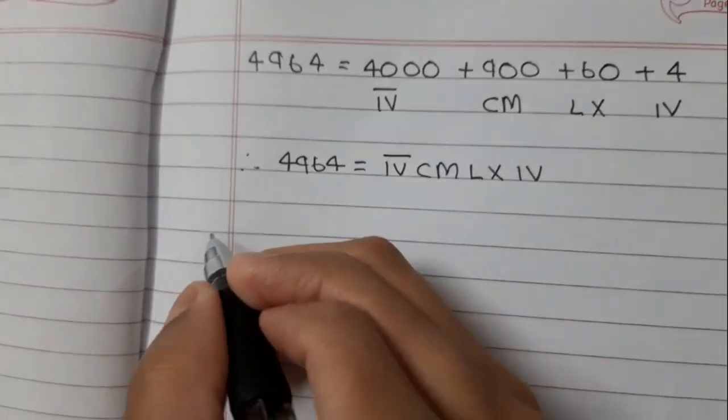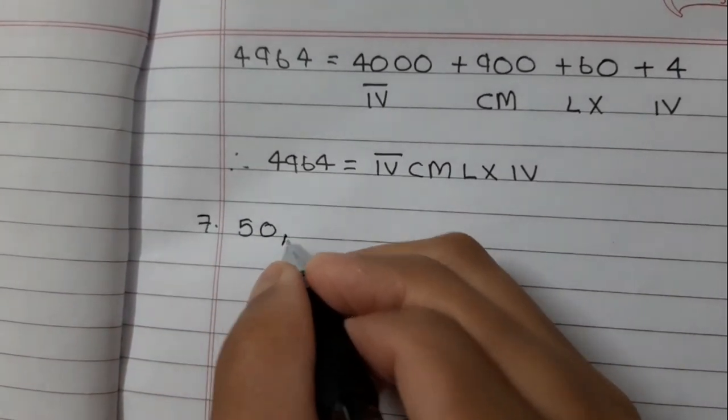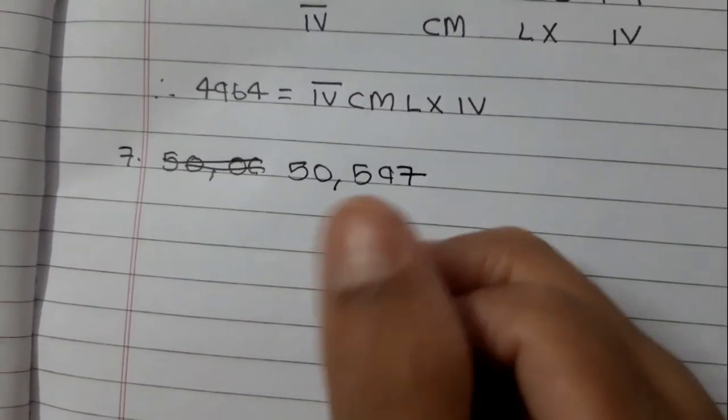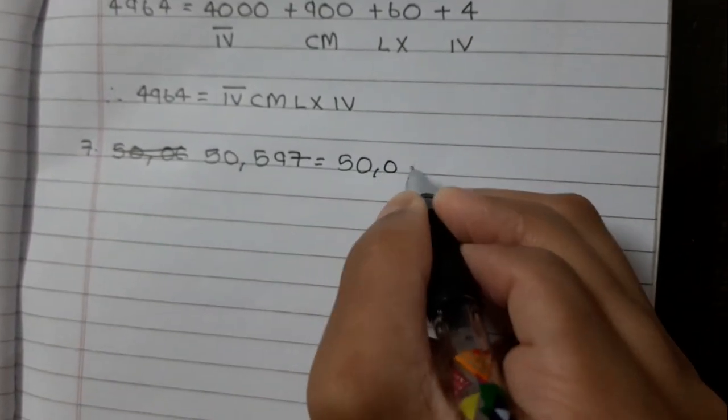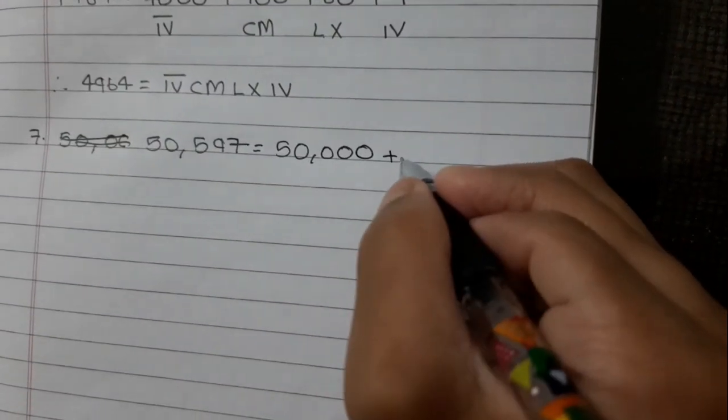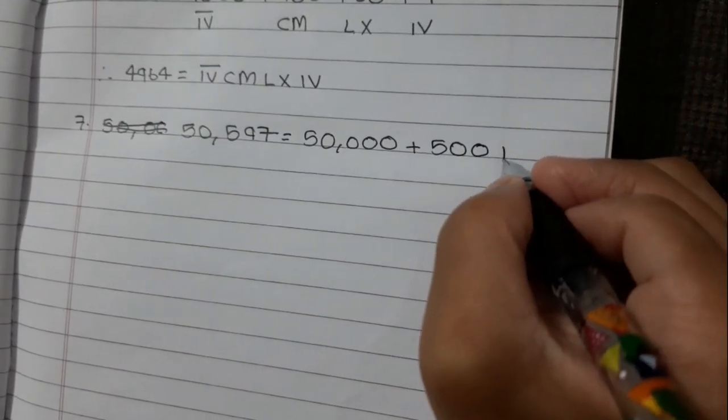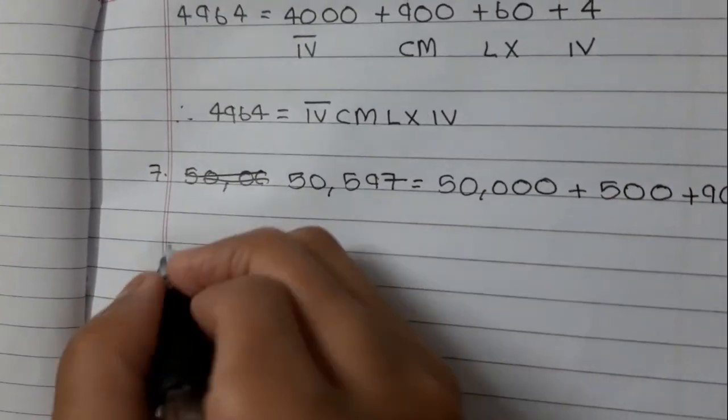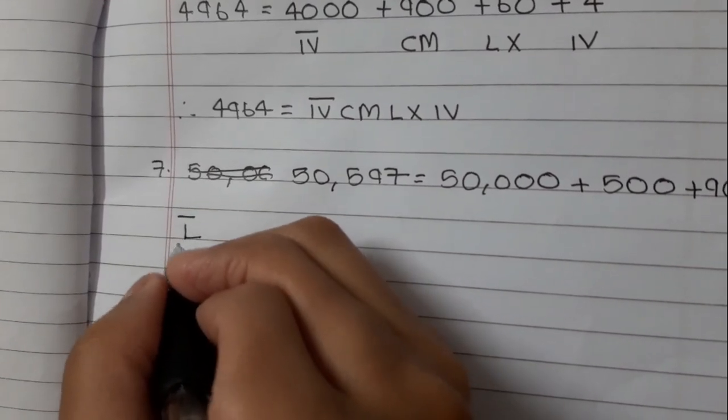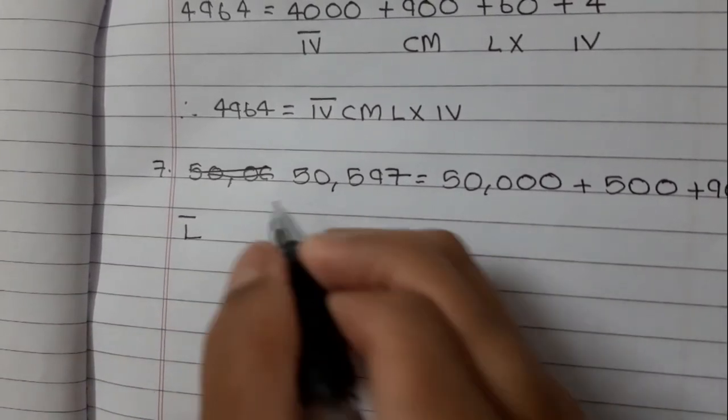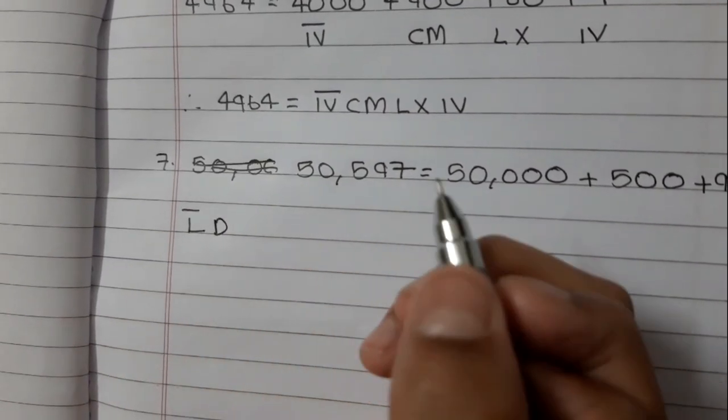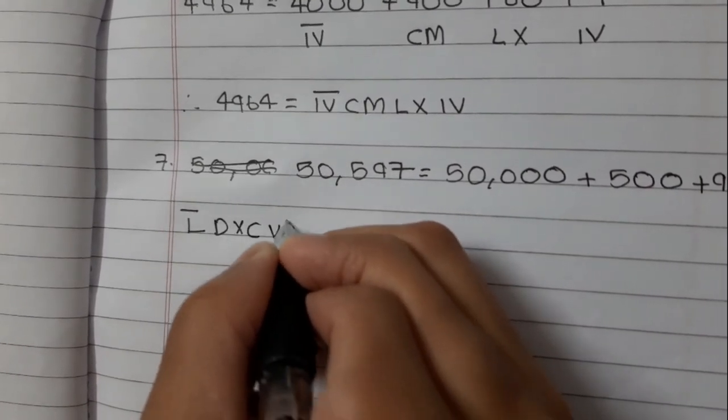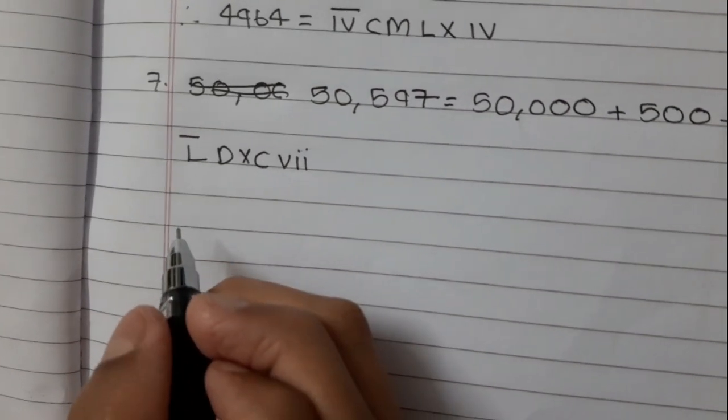Let's take some bigger numbers. Example 7: 50,597 equals 50,000 plus 500 plus 90 plus 7. So 50,000 is L bar, because L is 50, and 50 times 1000 equals 50,000. 500 is D. 90 is XC. And 7 is VII.